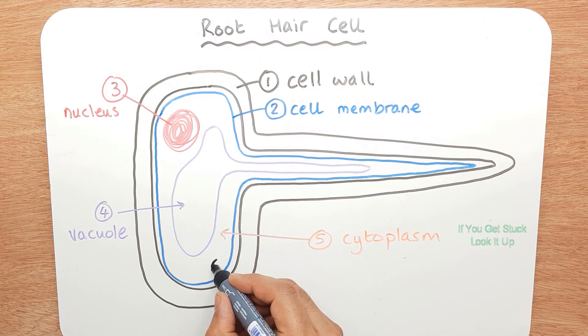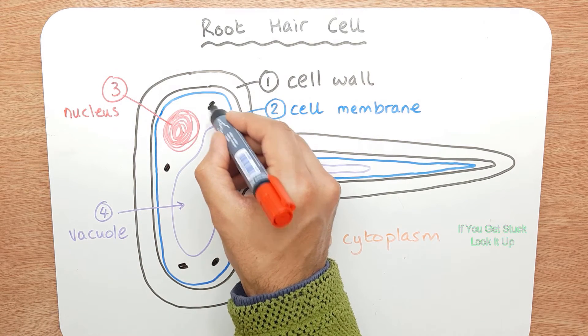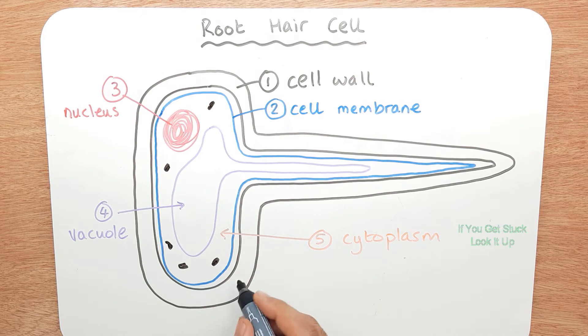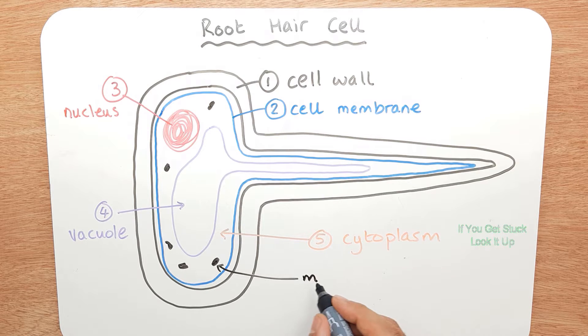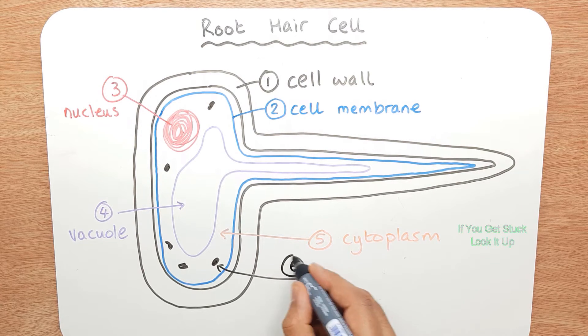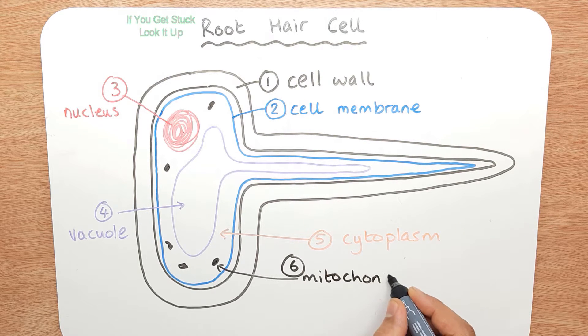And finally, we've got these structures that we'll add, the mitochondrion. We'll call that number six. And these are responsible for the energy in the cell.